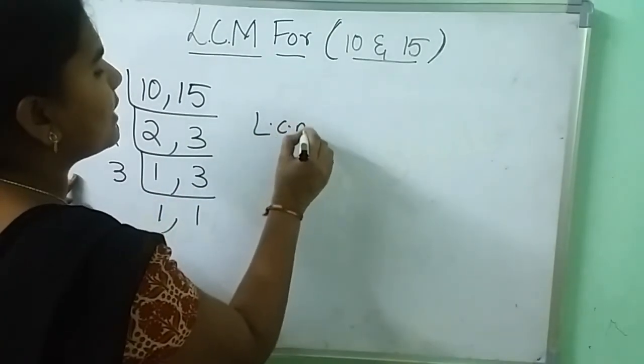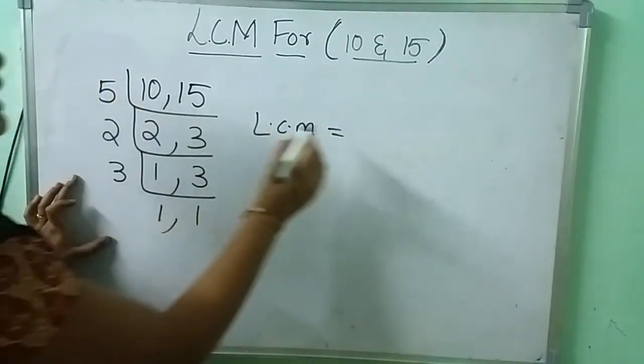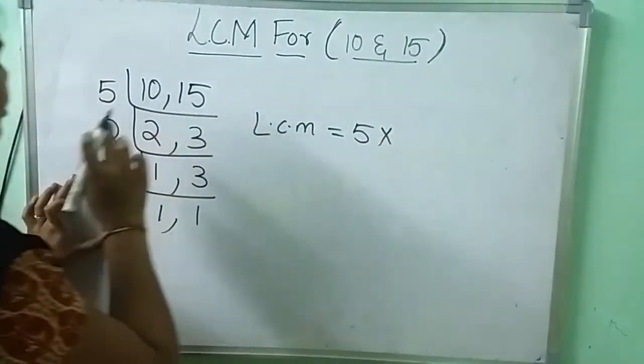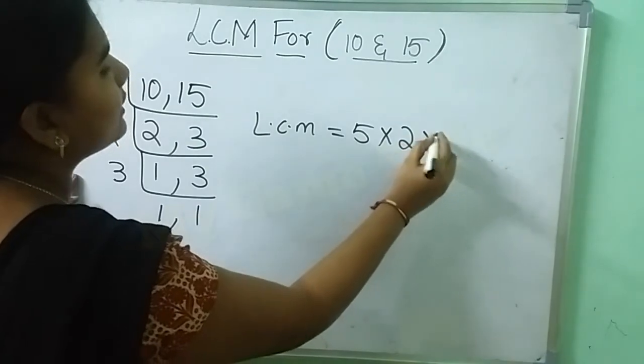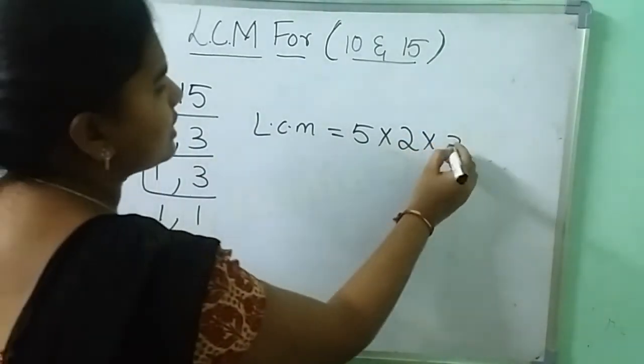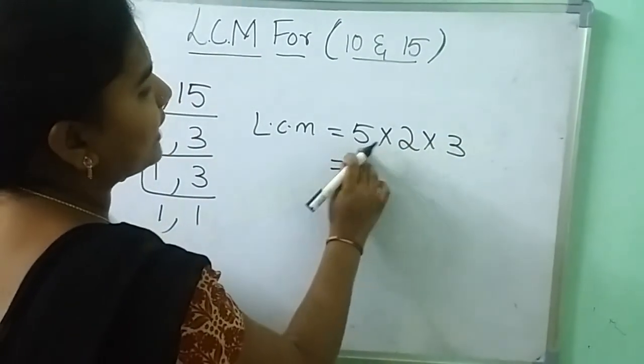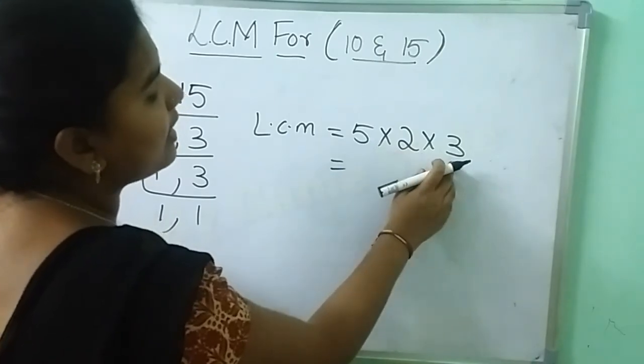Here, LCM is equals to 5 into 2 into 3. So, how much here? 5 2's are 10. 10 3's are 30.